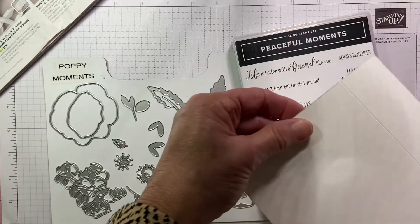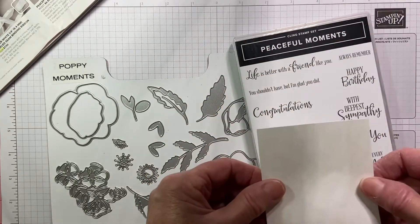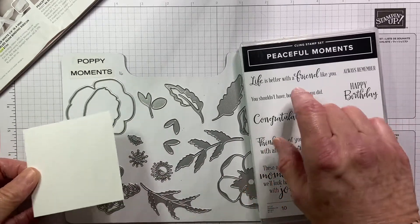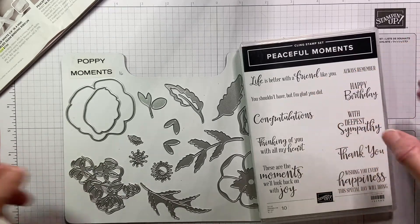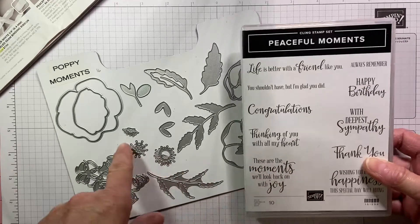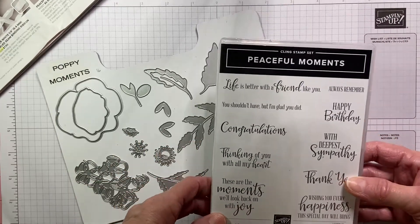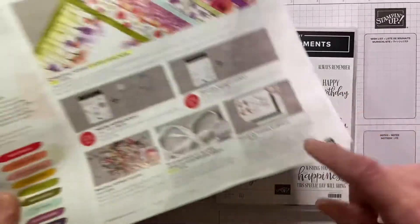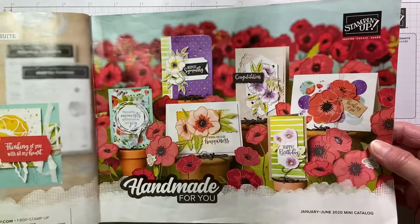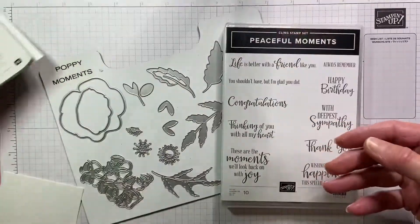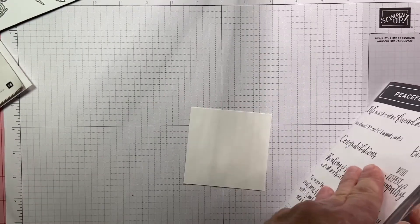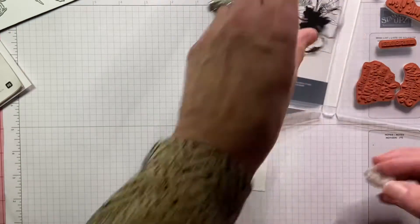I'm going to start by taking the panel. I want to do our stamping first. Let me just tell you what we're using today. We're using the Peaceful Moments bundle. That's a bundle of a set of dies and a set of stamps. If you buy them together, it's a 10% off discount. They're found on page 25 of our new mini catalog that Stampin' Up has offered good through June. So I'm going to stamp a happy birthday. I'm going to make this a happy birthday card.